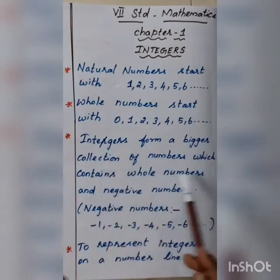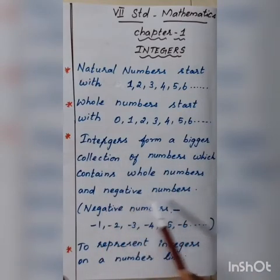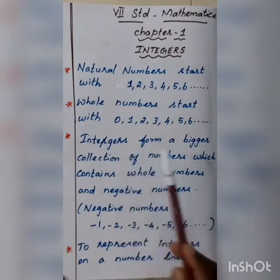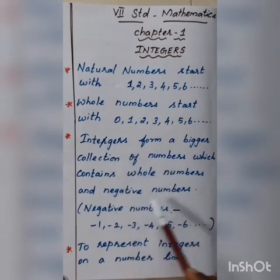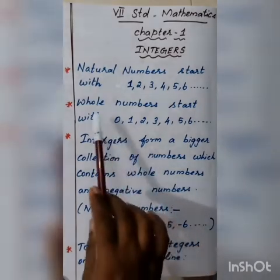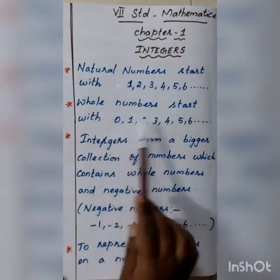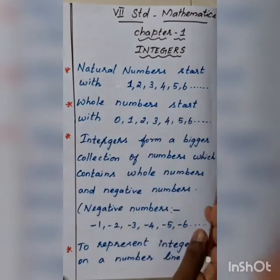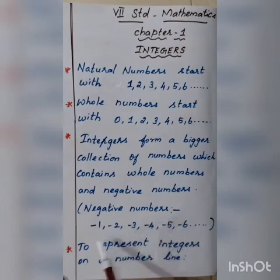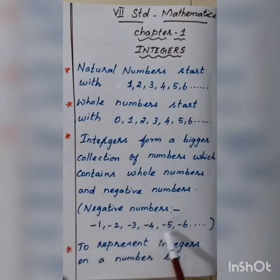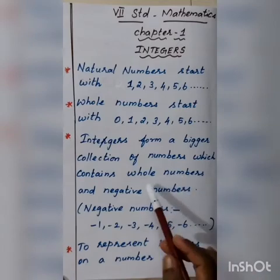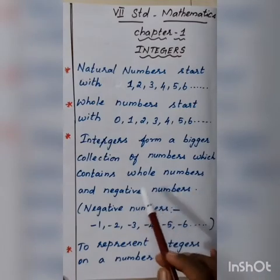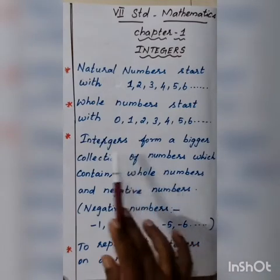Integers form a bigger collection of numbers which contain whole numbers and negative numbers. Whole numbers are 0, 1, 2, 3, 4 and so on. Negative numbers are minus 1, minus 2, minus 3, minus 4, minus 5, minus 6. So whole numbers and negative numbers together are the integers.